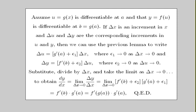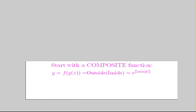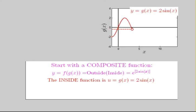Now, for an illustration. Let's begin with a composite function such as e to the 2 sine of x. The inside function is u equals 2 times sine of x, which has amplitude 2 and period 2 pi. It's shown in red.